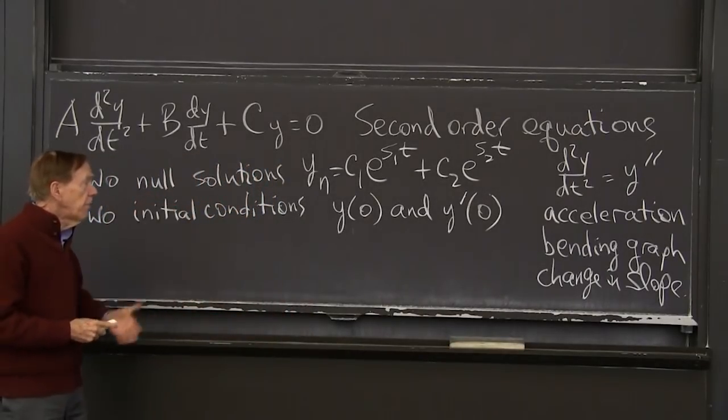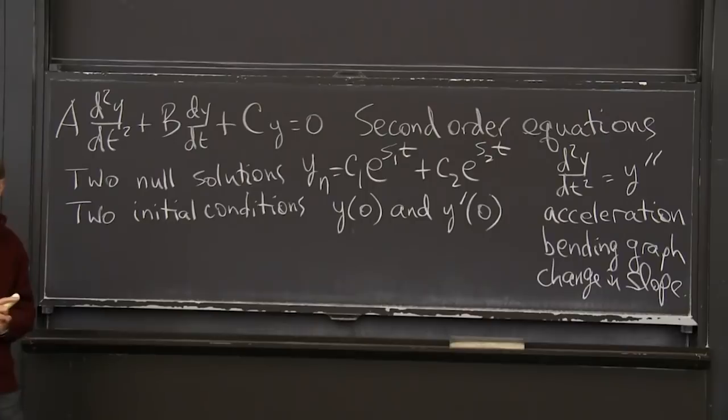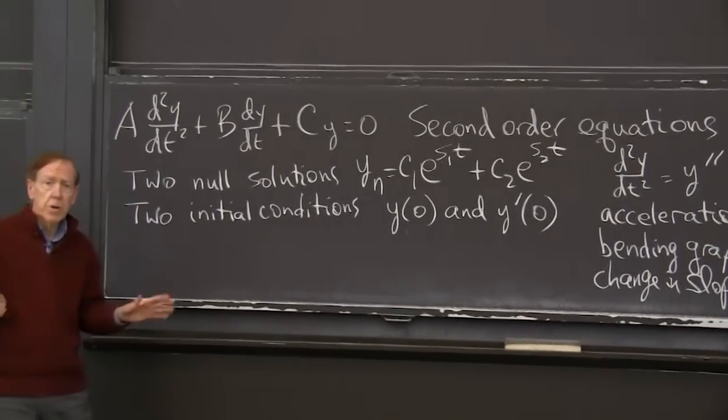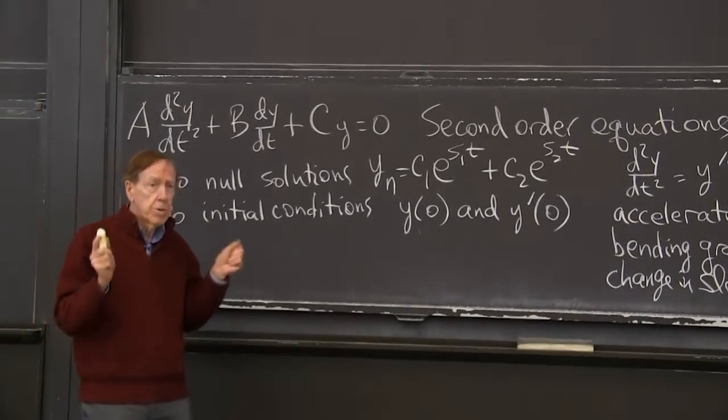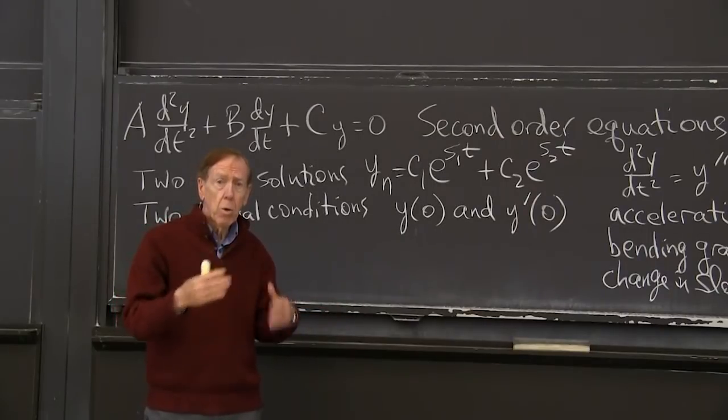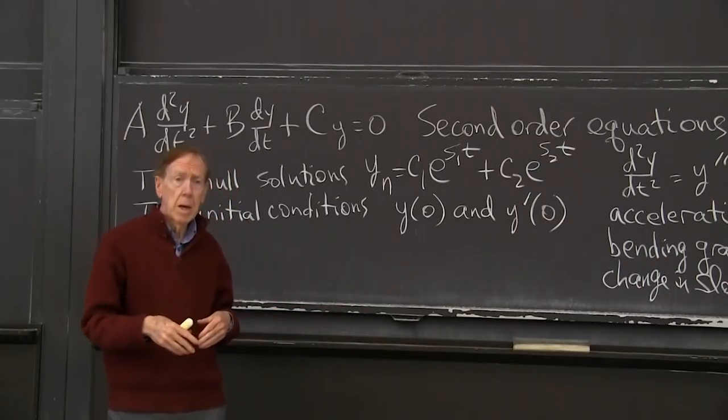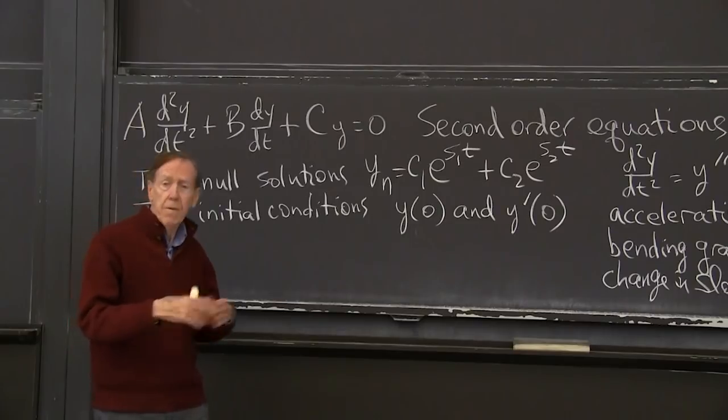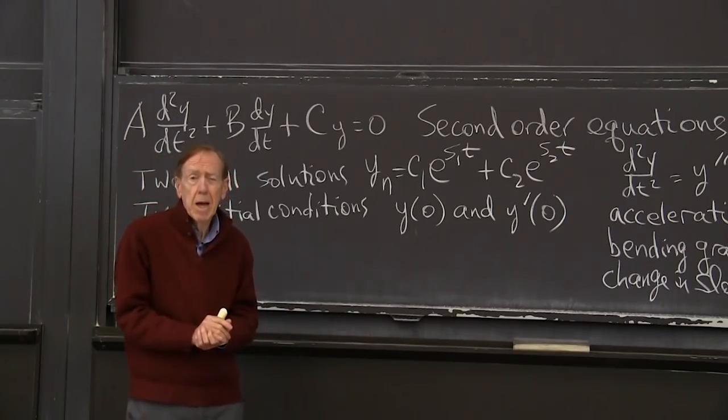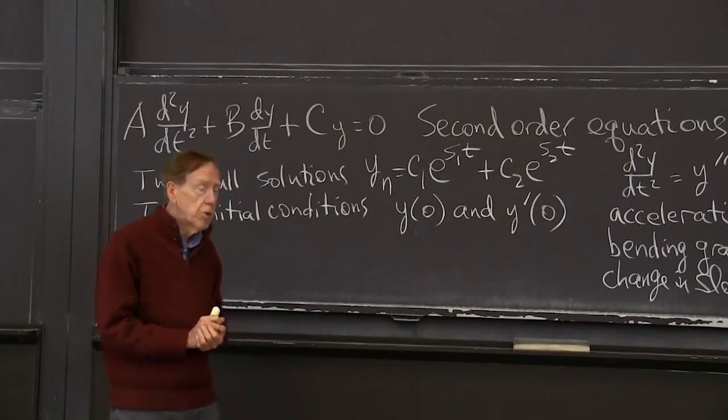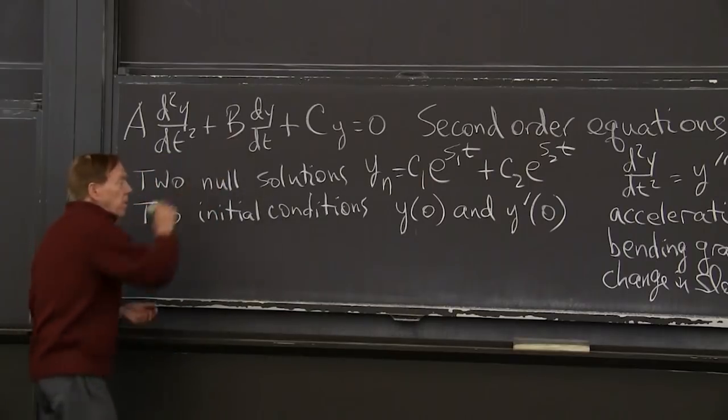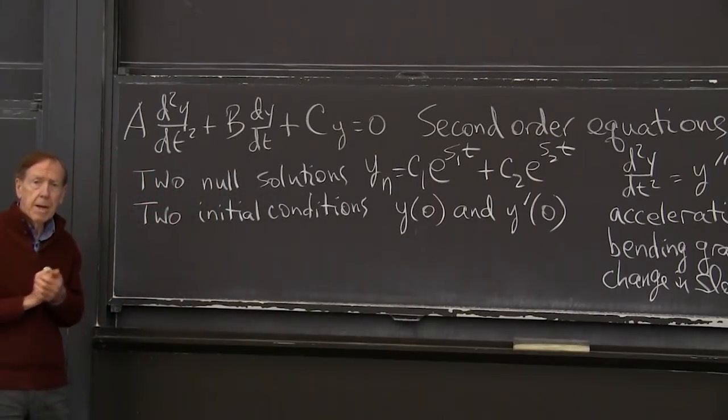So I'm ready for some examples. And the first example, the most basic equation of motion in physics and engineering, I would say, it's called harmonic motion. And b is 0. That's the key point. b is 0.